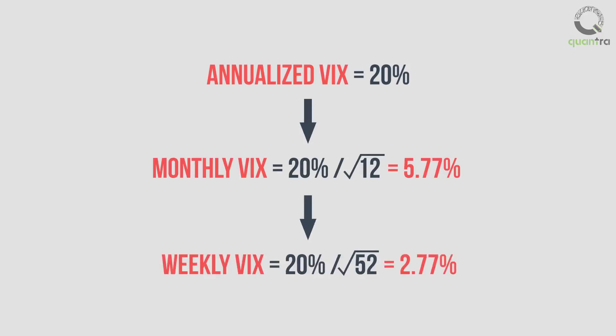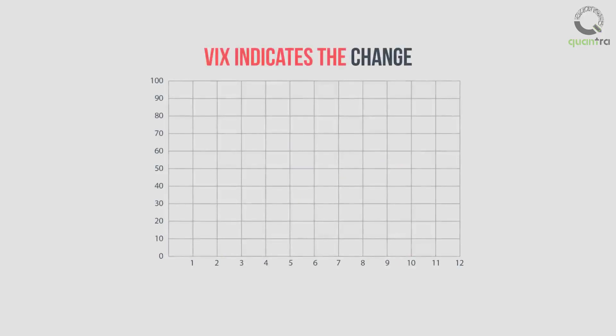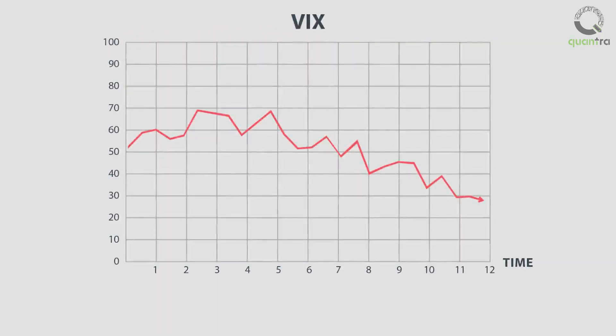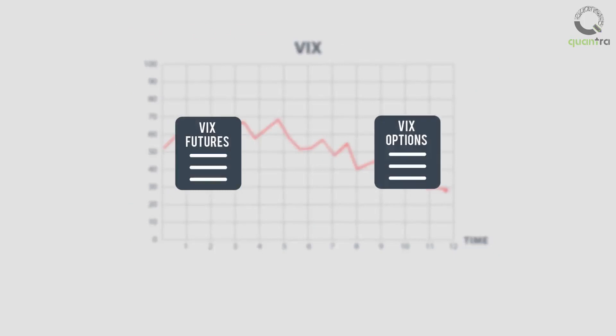Similar to historical or implied volatility, VIX indicates the change in upward or downward movement from the average price of the index, but does not specify the direction of change. VIX futures and VIX options were also introduced in due time, as investors expressed interest in trading instruments that captured the volatility of the market.